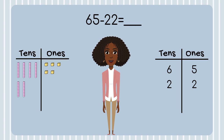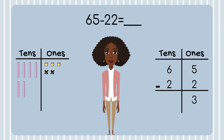Now, how much do we need to take away from 65? Great job — 22. But remember, we're going to break it down and make it easier. Which place value spot do we start in? The ones place. We have 5 ones. How many do we need to subtract? That's right, 2. Count as I take away 2 ones. How many ones do we have left? Awesome job! We have 3 ones left.